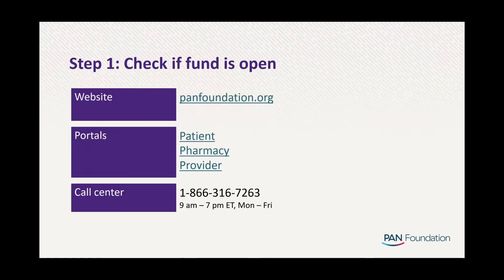Step one: check to see if the disease fund is open. You can go to PanFoundation.org under 'Find a Disease Fund,' or type the name of the disease fund on the home page. Another way is by visiting our patient, provider, or pharmacy portal and checking the disease fund and medications tab. You can also call PAN to verify the status of all our disease funds.